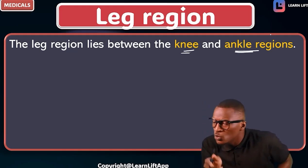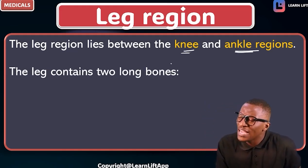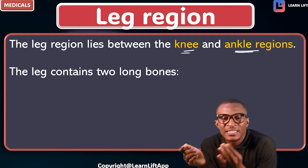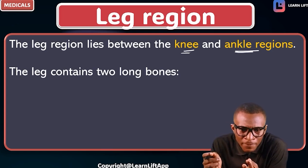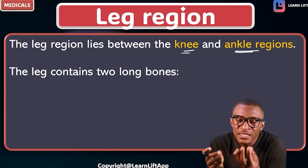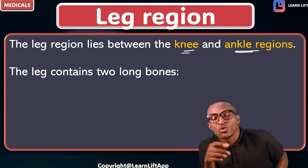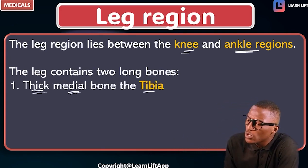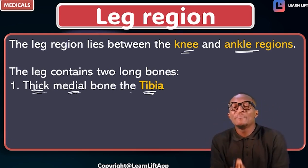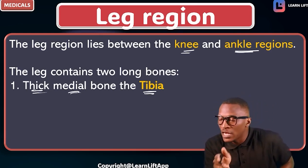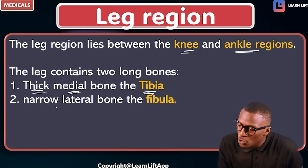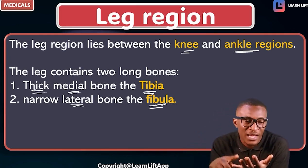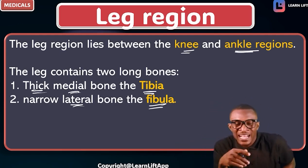Also note that the leg contains two long bones. One is thick and the other is thin. The thick bone is called the tibia, while the slim or thin bone is called the fibula. The thick medial bone is the tibia — it is thick and at the medial region — while the one that is narrow and lateral is the fibula.